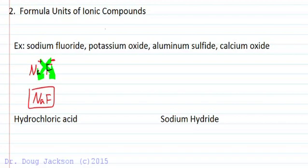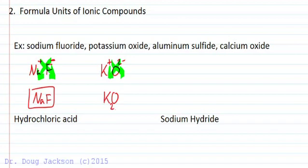What if we have a multiple charge? For potassium oxide: potassium is group one, so plus one; oxide is group six, so it gets a two minus. We cross the charges — two goes to potassium and one goes to oxygen — giving us two potassium ions to one oxygen ion: K₂O.